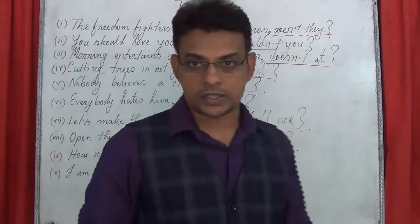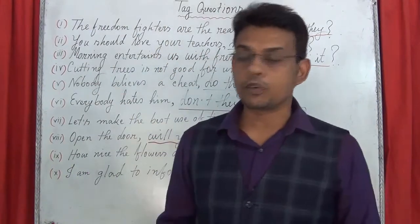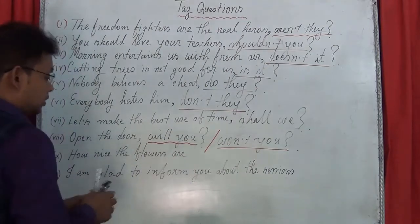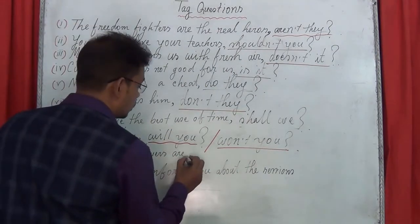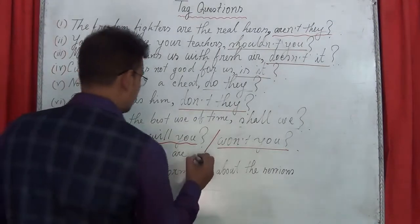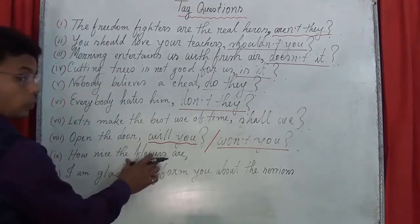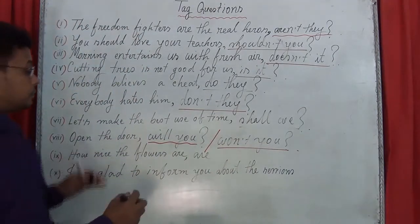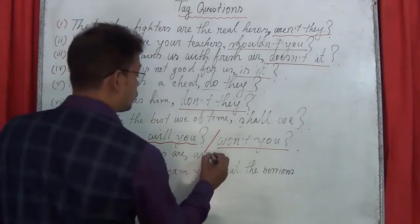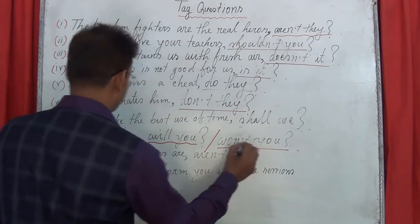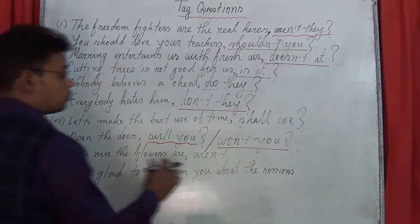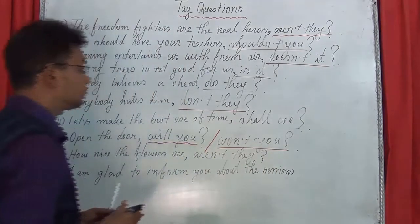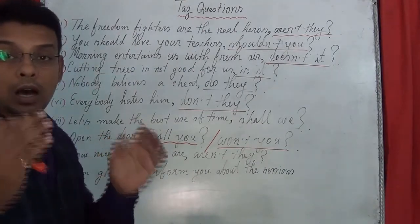Next: 'How nice the floors are!' You can see the exclamatory structure. Add a comma, then the auxiliary is 'are.' The sentence is affirmative, so you have to use the negative form — 'aren't.' The subject 'the floors' — the pronoun is 'they.' The correct answer is: 'aren't they?'